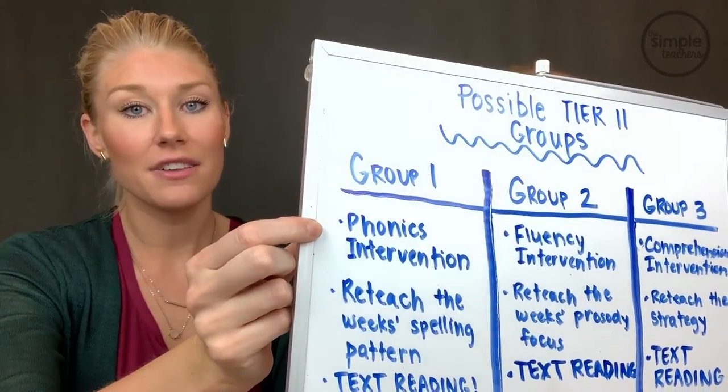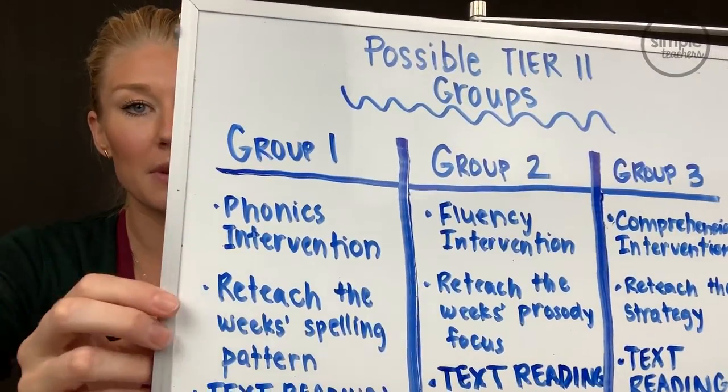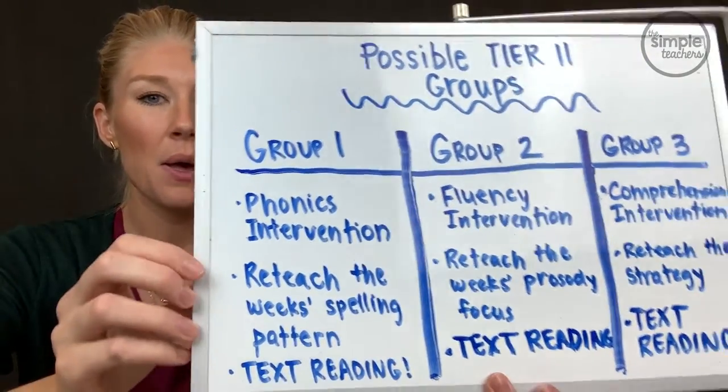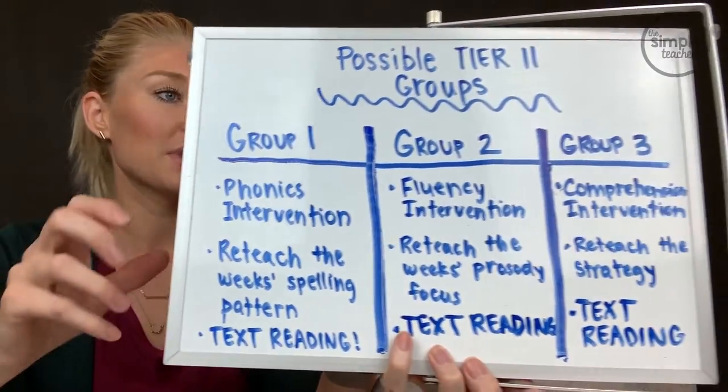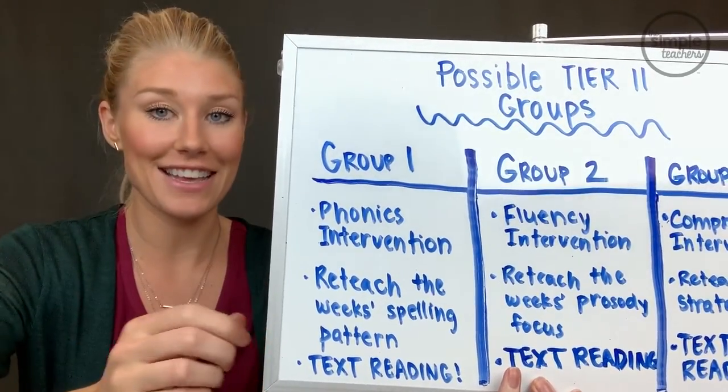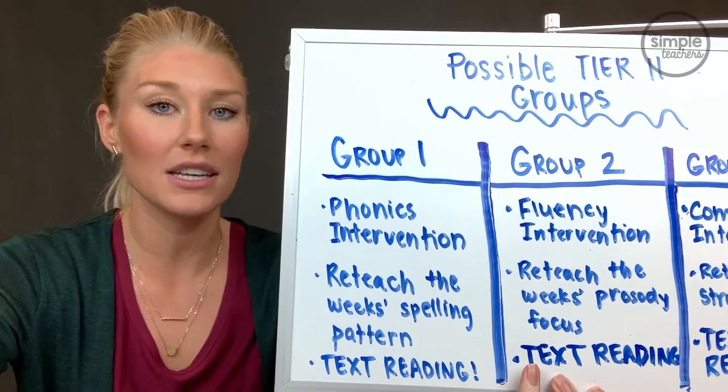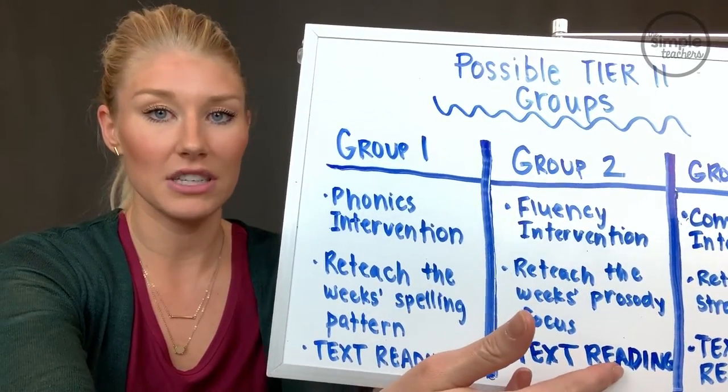So maybe you have one phonics group for sound-spelling and another for multisyllabic word reading. Another group idea could be students who are accurate readers but not reading with fluency — their rate is not where it should be, or their voice isn't sounding smooth, which can have a huge impact on comprehension. They might need a fluency intervention. If you're not teaching a prosody fluency focus lesson in Tier 1, this would be hard to do. Make sure you're teaching it in Tier 1, and then in Tier 2 you reteach whatever prosody you've been teaching — using text reading, your main selection, or your decodable from your phonics lesson.